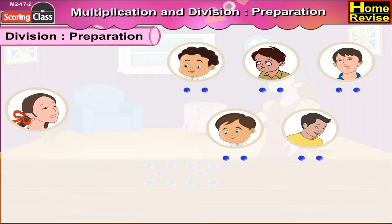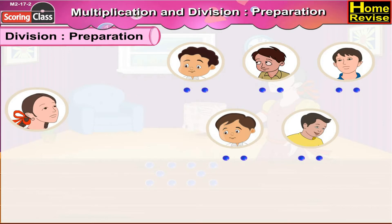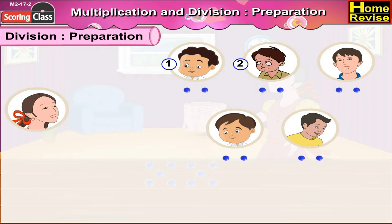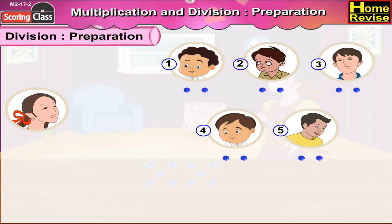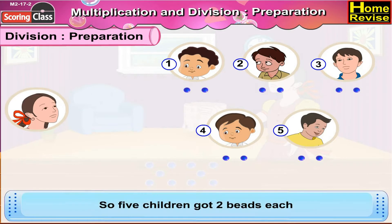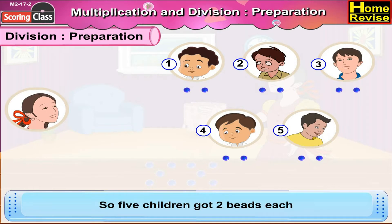Now, let us count the total number of children who got two beads. One, two, three, four, five. So, in all, five children got two beads each.